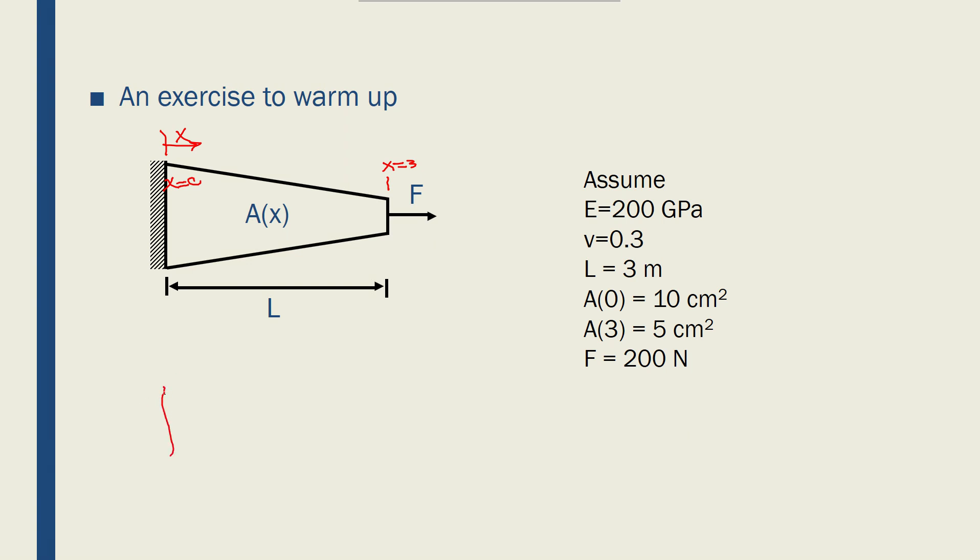Our previous example was a little bit different. We had a bar like this and I had A1 and A2 here, L1 and L2 here and they were very discrete, so I had two discrete sections of the bar which I could do a discretization.